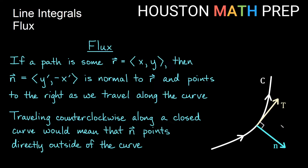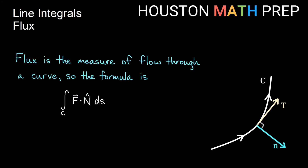If we're traveling counterclockwise along a closed curve like a circle or an ellipse, that means our vector n is pointing normal but also pointing directly outside of the curve. We're going to define flux as the measure of flow through a curve, so our formula for this flow is the line integral over the curve of F dot n-hat — the normal amount of flow through the curve — rather than t-hat, which was circulation.